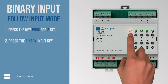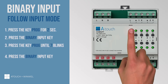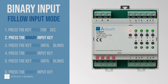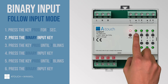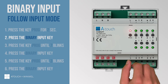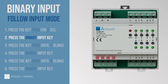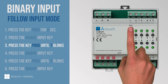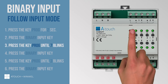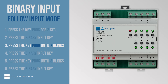Press the key prog for two seconds, then press the binary input key. The prog LED starts to blink. We will set the follow input command, so press the key prog repeatedly until the LED blinks seven times — the number of blinks for the follow input command.